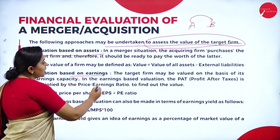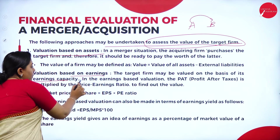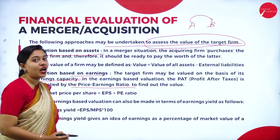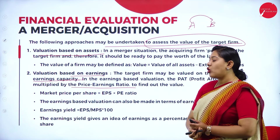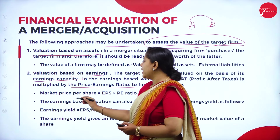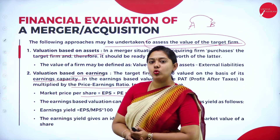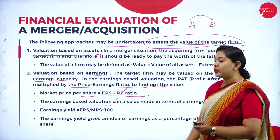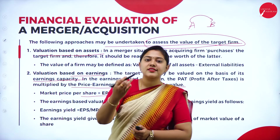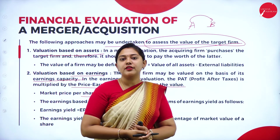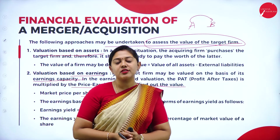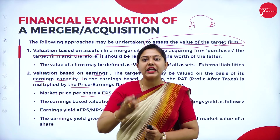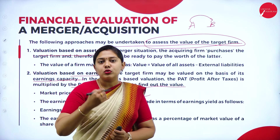The second approach is valuation based on earnings. The target firm may be valued based on its earnings capacity. In earnings-based valuation, profit after tax is multiplied by the price-to-earnings ratio to find the value. The formula is: Market Price per Share = EPS × Price-to-Earnings Ratio. Earnings yield is calculated as: Earnings Yield = (EPS ÷ Market Price per Share) × 100. For your examination, 10-mark problems will be given. You need to calculate the exchange ratio based on Net Present Value method, valuation based on EPS, and valuation based on market price.